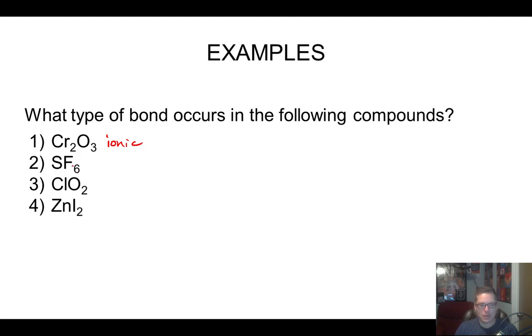Sulfur hexafluoride. We find S, S is a nonmetal, it's number 16. Fluorine is a nonmetal, it's number 9. So this guy would have to be covalent.